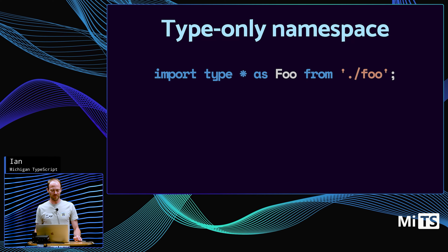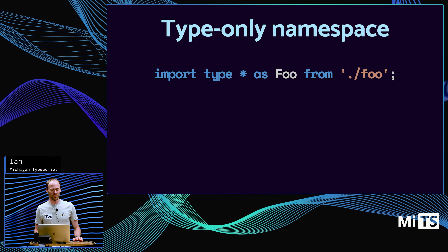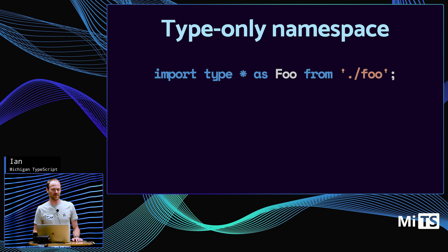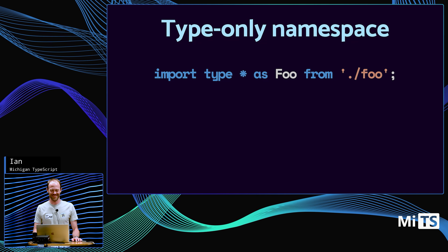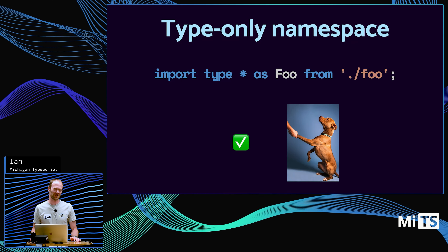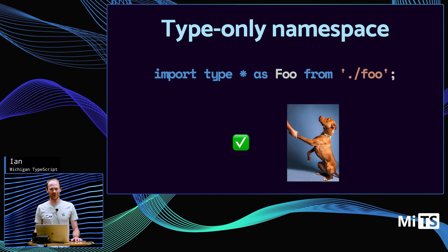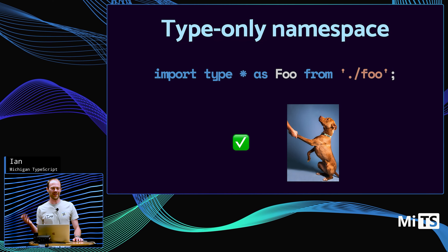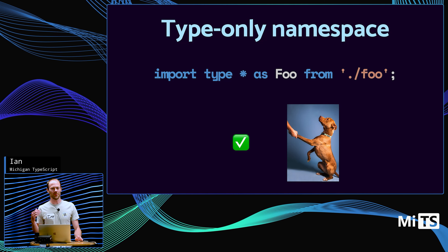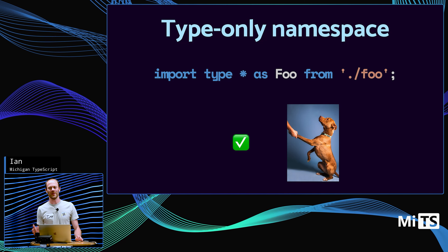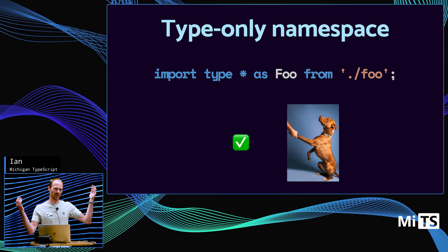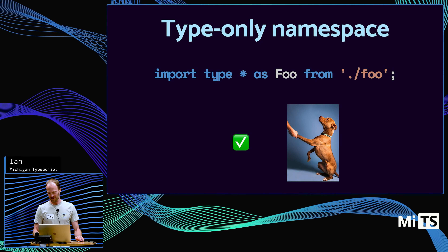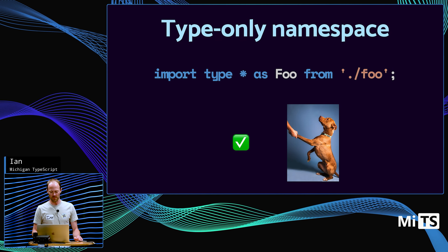Last one: a type-only namespace import. Yes, that works fine. Just like you can have multiple values exported from a file, you can have multiple types exported, and this will group them all up into a type namespace.